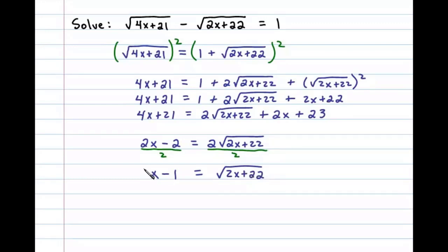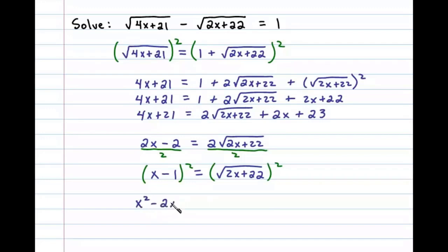Now at this point we can square both sides again. Squaring x minus 1, we're left with x squared minus 2x plus 1, and that'll be equal to 2x plus 22.